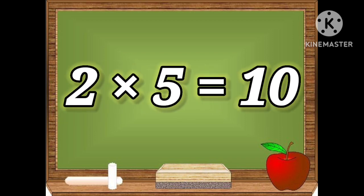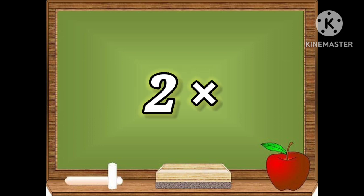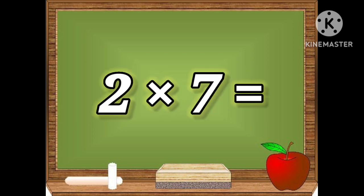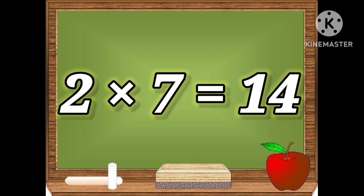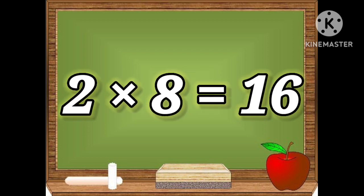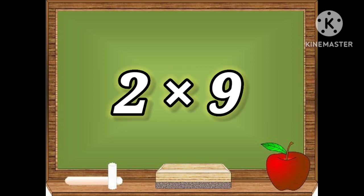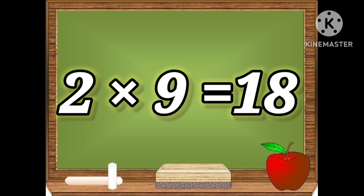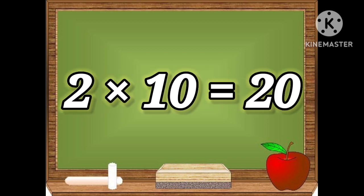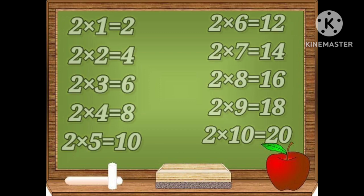Two sixes are twelve, two sevens are fourteen, two eights are sixteen, two nines are eighteen, two tens are twenty. Let's repeat the table.